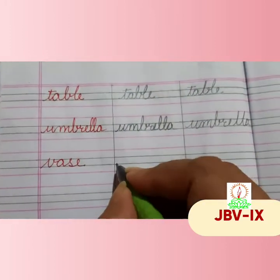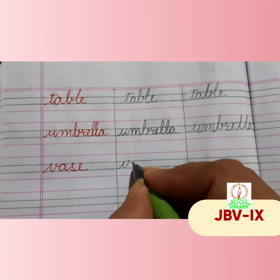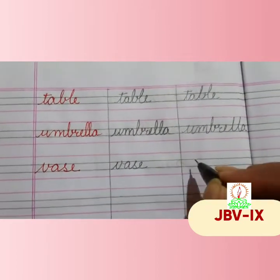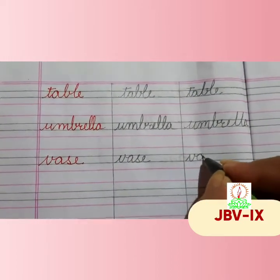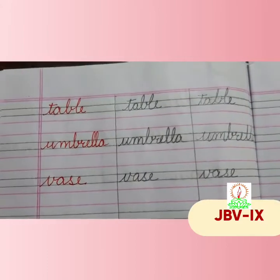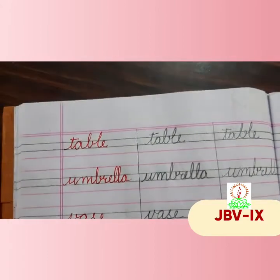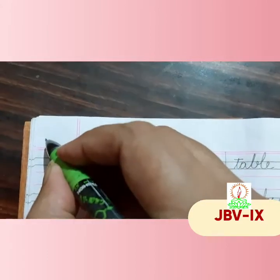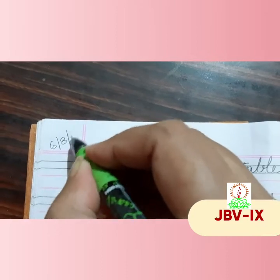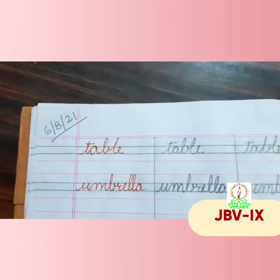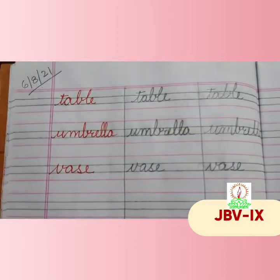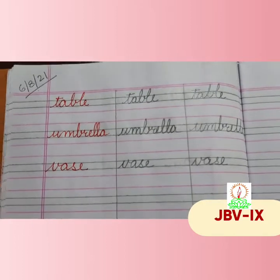Children, while writing, say the words and then write, so that you will be acquainted with the words. Now write the date also — 6-8-21. Like this you write and post it in your groups.